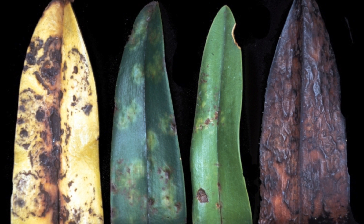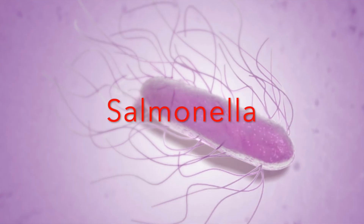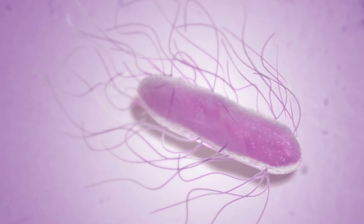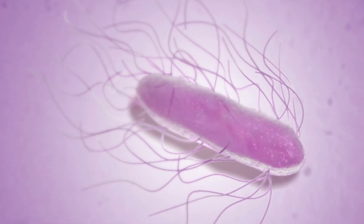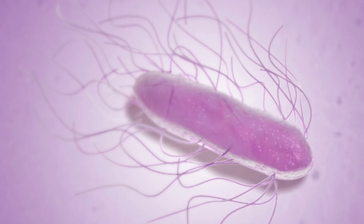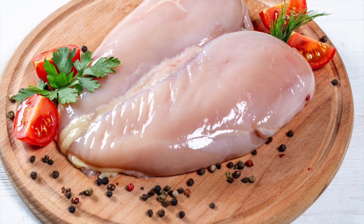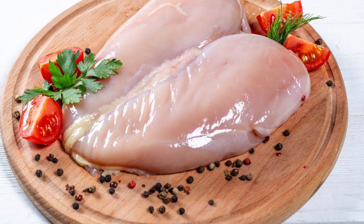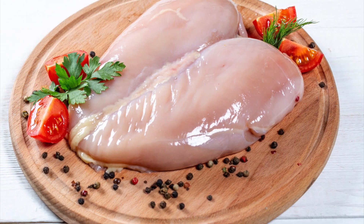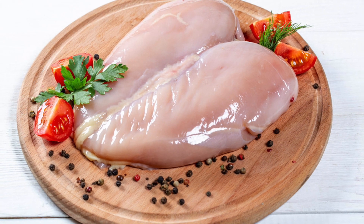Next we are going to look at some bacterial diseases, and the first one is salmonella food poisoning. Salmonella are bacteria that live in the guts of many different animals, meaning they can be found in raw meat, eggs, and other egg products like mayonnaise. If these bacteria get into the body they disrupt the balance of the natural gut bacteria and can cause salmonella food poisoning.